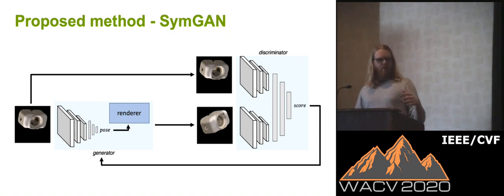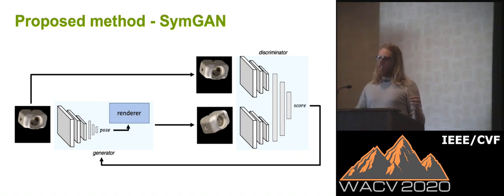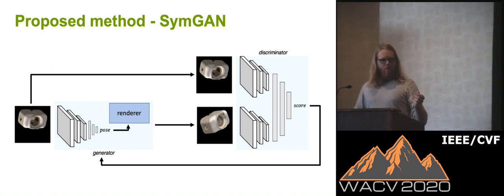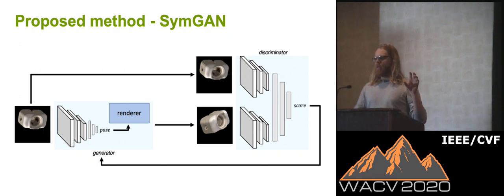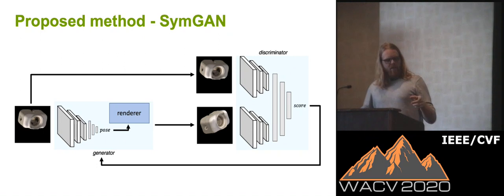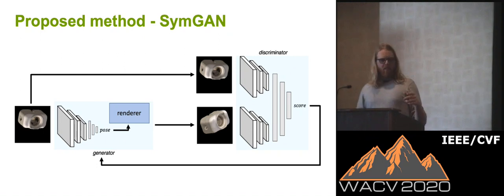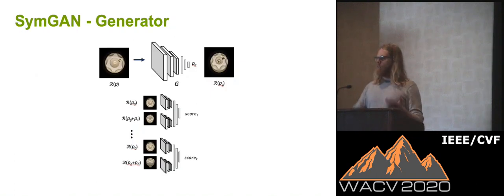This is our system. We have a generator that takes as input an image, then regresses to a pose. We render that pose and send the input from the generator and the rendered pose to a discriminator, which says whether these two poses are visually similar or not and assigns a score. Using that score, we go back to the generator to train it. However, the renderer is non-differentiable.